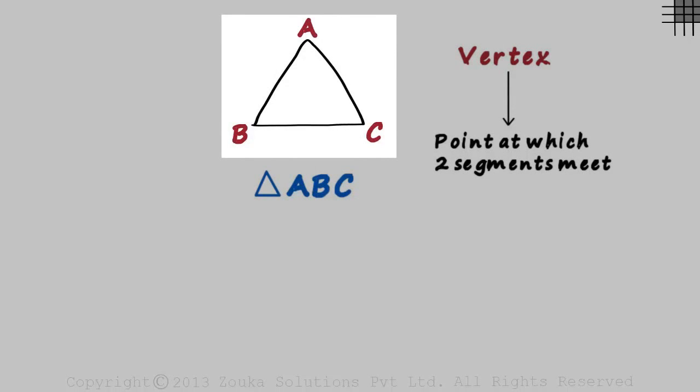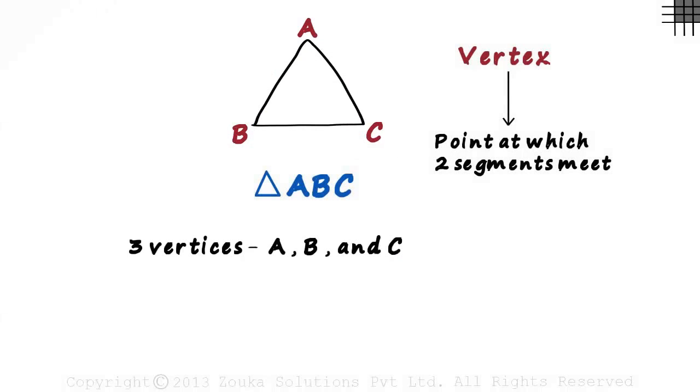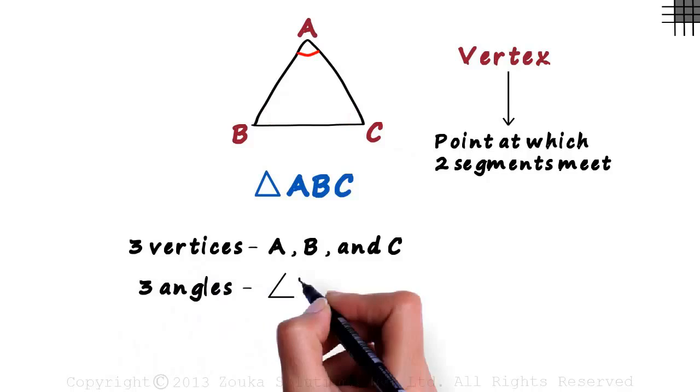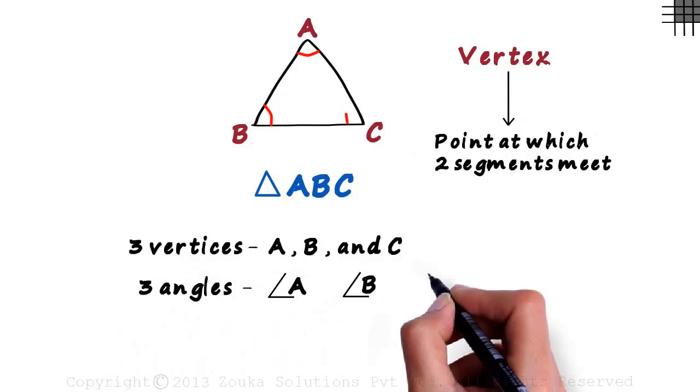Look at the triangle closely. You would see vertices, angles and sides too. We have seen that they have three vertices A, B and C. We know that an angle is formed when two segments meet. Which means we have three angles here: Angle A, Angle B and Angle C.